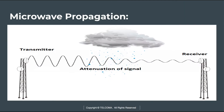This diagram shows the transmitter and receiver in a line-of-sight transmission. When there is rainfall or fog, it will attenuate the signal. If weather conditions are not good, they will affect the transmission of the microwave signal, causing losses or attenuation.